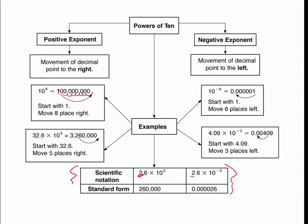Here's another example where we start with 32.6 times 10 to the 5th. The directions might ask: what is the value of this? So we write down 32.6, and the exponent is 5, which tells you to move 5 places to the right, starting at the decimal point. Fill in each bump that doesn't already have a number with zeros. Counting backwards to find your commas — 1, 2, 3 — the answer is 3,260,000. There's no decimal needed in your answer.